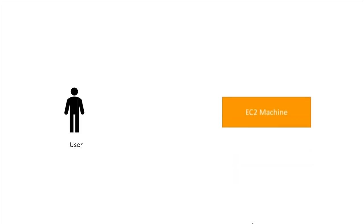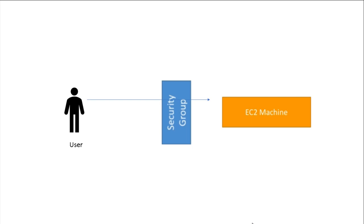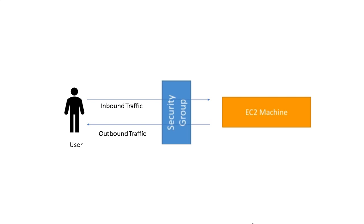This is your EC2 machine and this is your user. That user is communicating with the EC2 machine through Security Groups — the Security Group is assigned to the EC2 machine. Users communicating to EC2 machines is inbound traffic, meaning from the outside world the user is connecting to the EC2 machine. EC2 machines communicating to the outside world is called outbound traffic.